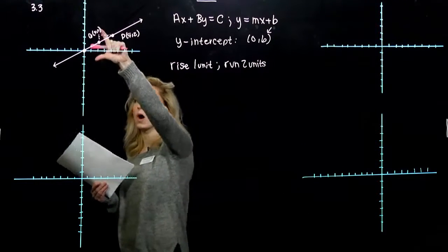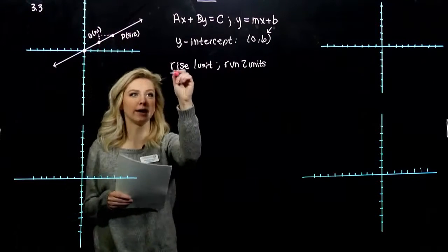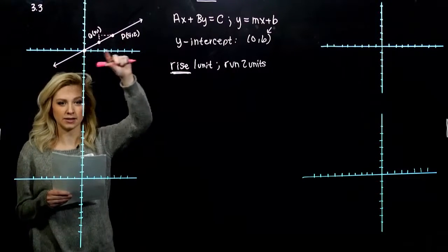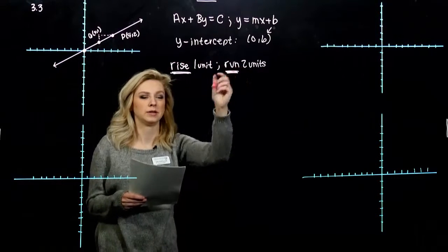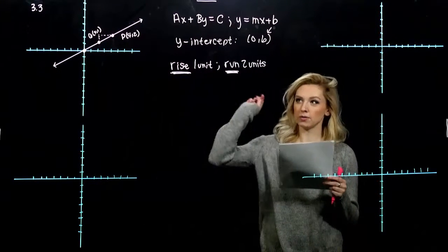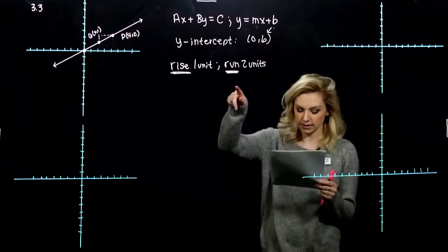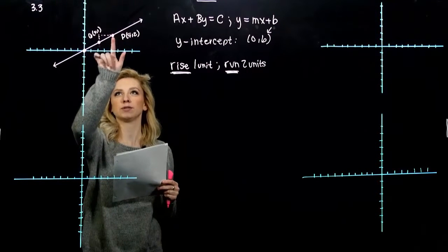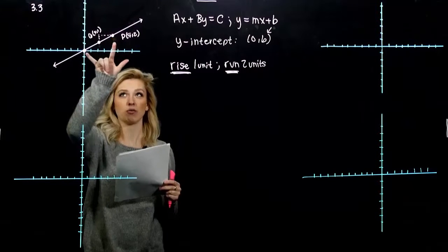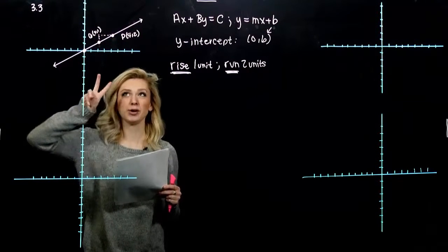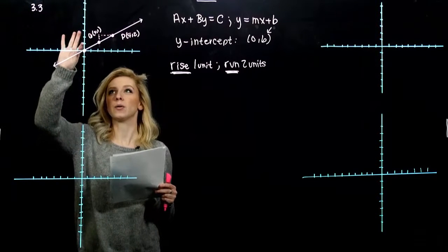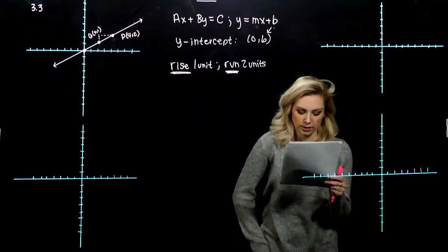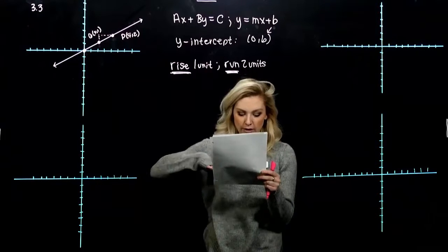We call that change in the y's, how I'm moving up and down, the rise. And we call the change in the x's, how you're moving along the x-axis, we call that the run. So rise up and down, run left and right. The ratio of rise over run is the same for any two points on a line. I could pick other points, and that ratio is going to appear larger but it's still exactly the same. Because from zero I would have to go up two and over four, which is still the same ratio for the slant of the line. We call that ratio the slope.